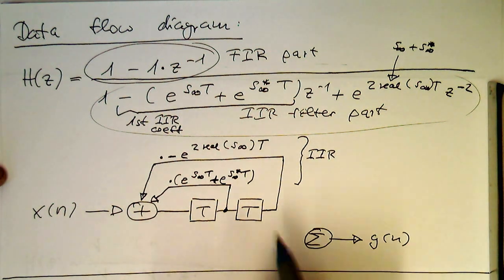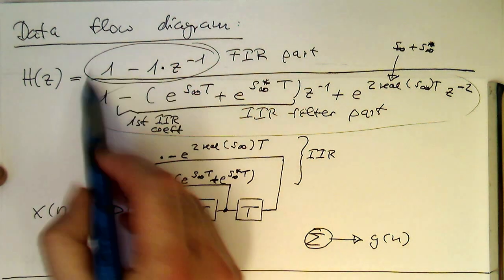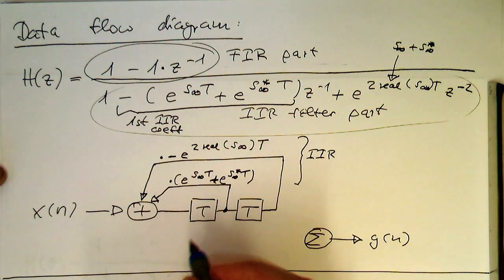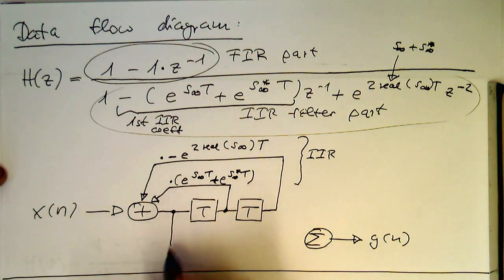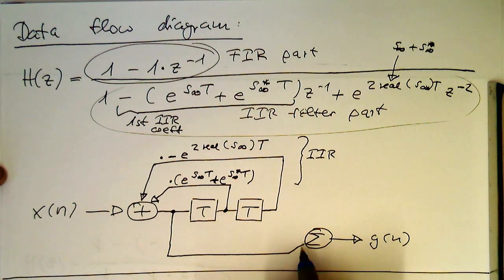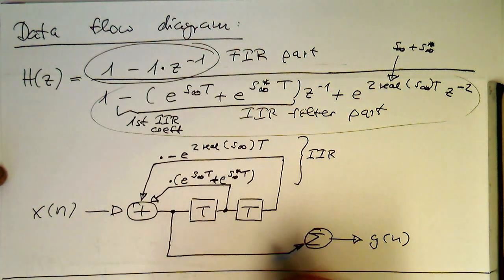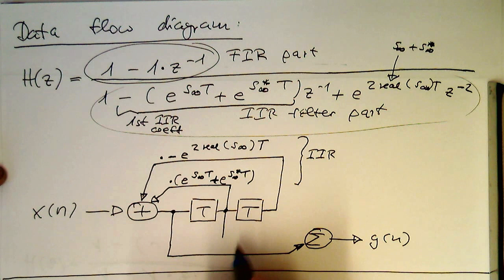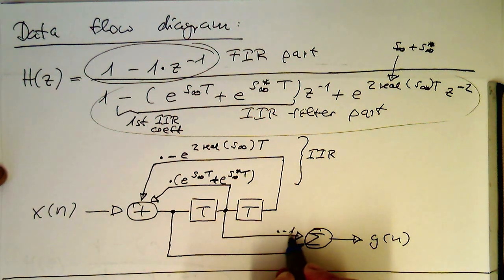Now we just need to create the output. We take the undelayed part and send it to our output without modification. Then we add the negative part of the one-time-step delayed version, multiplied by minus one.